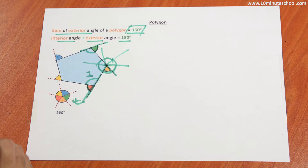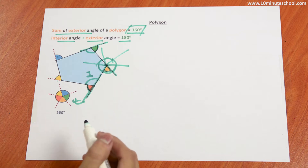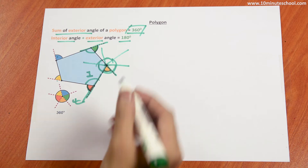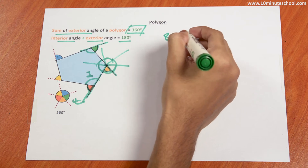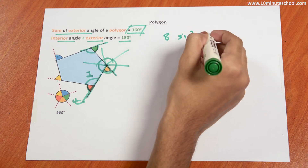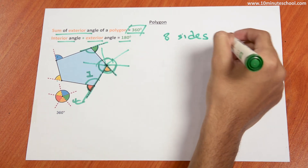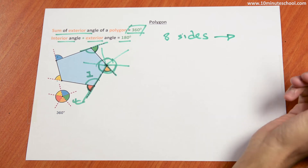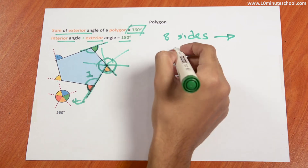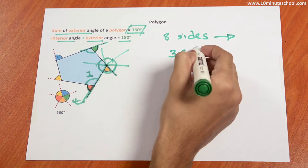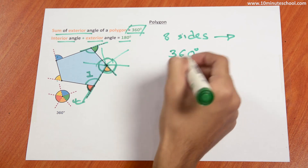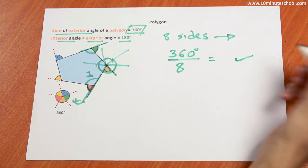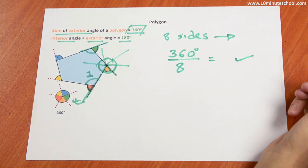For example, if you have a polygon with 8 sides, that means an 8-sided polygon. The exterior angle will easily give you the answer. Because the total sum is 360 degrees, you just divide 360 by 8, and you will get the answer. You can easily find it out.